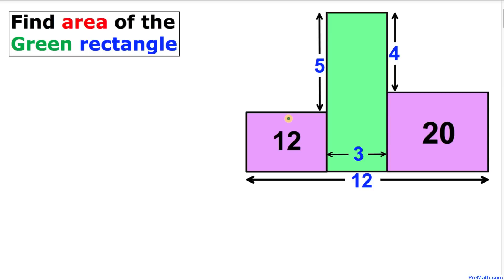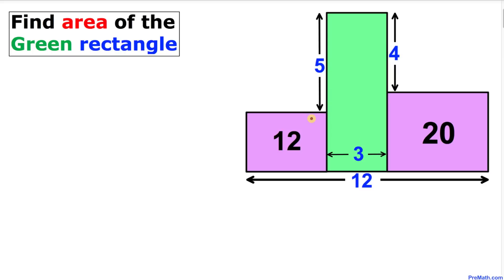Welcome to Pre-Math. In this video tutorial, we have two purple and one green rectangle. The areas of the purple rectangles are given, and we are going to calculate the area of the green rectangle. All numbers are going to be whole numbers — no decimals. Let's go ahead and get started with the solution.